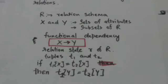It means that values of Y component of a tuple depend on the values of the X component, or we can say that there is a functional dependency from X to Y, or we can say that Y is functionally dependent on X.